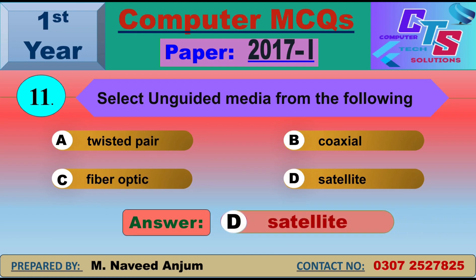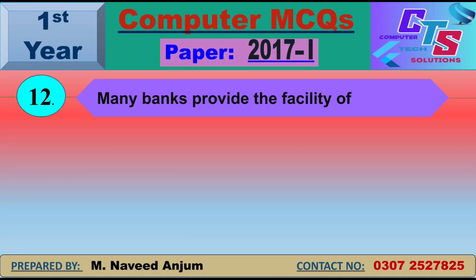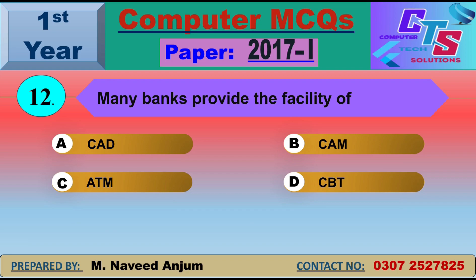Question number 12: Many banks provide the facility of what? This MCQ is from Chapter 4. Banks give us the facility of ATM — Automated Teller Machine. The ATM machine is placed outside the bank where we withdraw cash and perform transactions. Option C — ATM — will be the right answer.